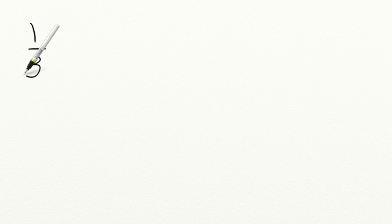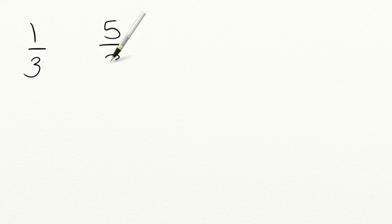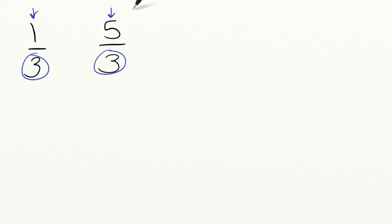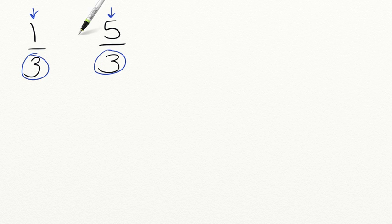Let's go through a few practice problems together. Can you compare one-third and five-thirds? Let's start by looking at our denominators. Since both denominators are the same, we compare our numerators and find which is greater. Since five is greater than one, that means one-third is less than five-thirds.